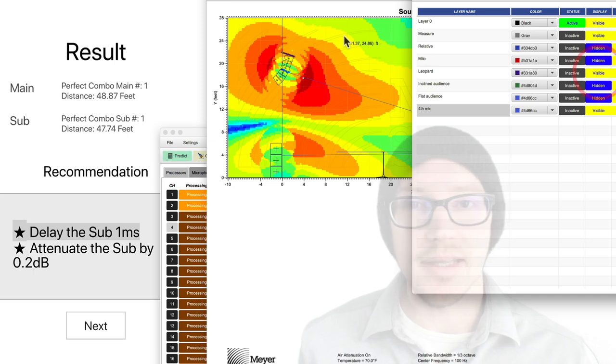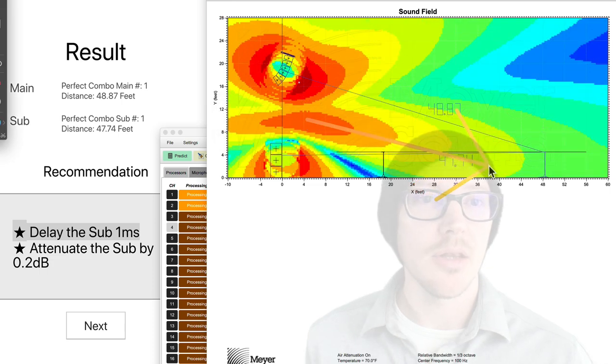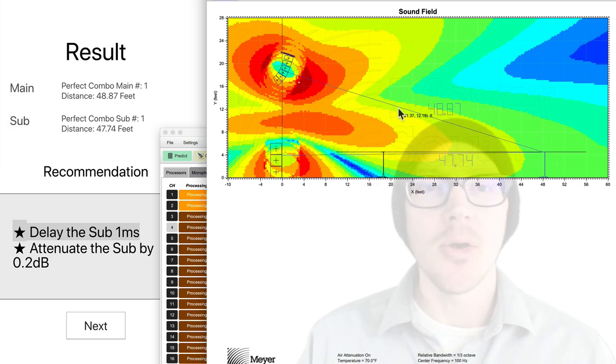And we've got the Leopard and the 900LFC. Now we've got summation through a large portion of the audience, and then cancellation up here at the top. So as you can see, if we only use distance offset and we don't really know the relative phase relationship before we start, then we're really rolling dice, and we have a 33% chance of getting cancellation and a 66% chance of getting summation.